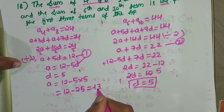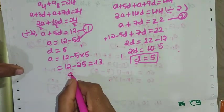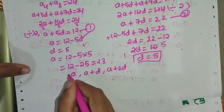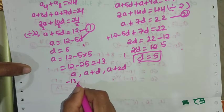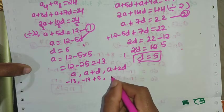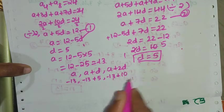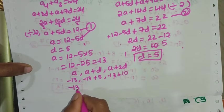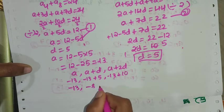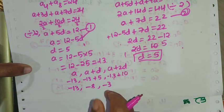The first three terms are A, A+D, and A+2D. With A = -13 and D = 5: first term is -13, second term is -13 + 5 = -8, third term is -13 + 10 = -3.